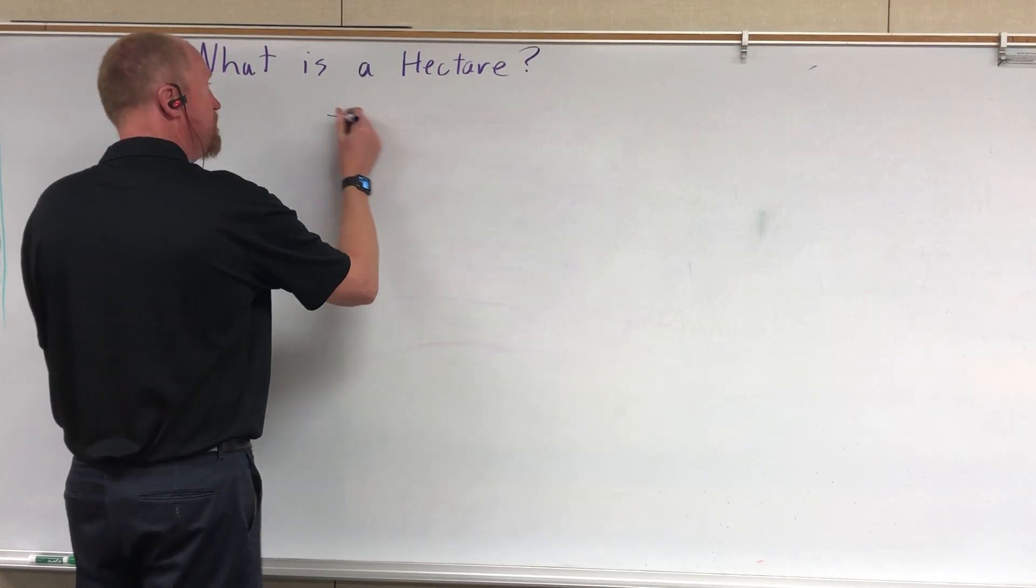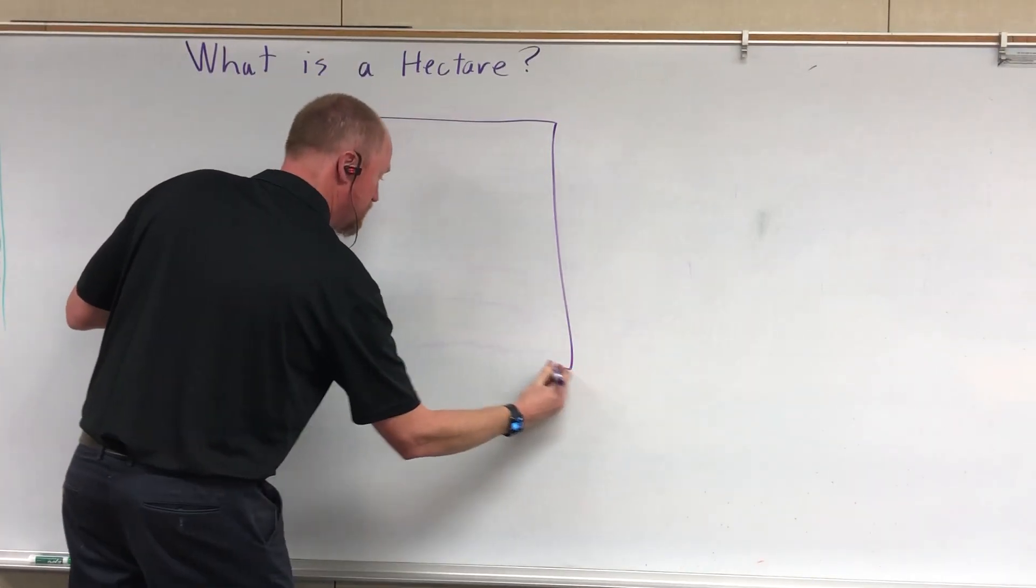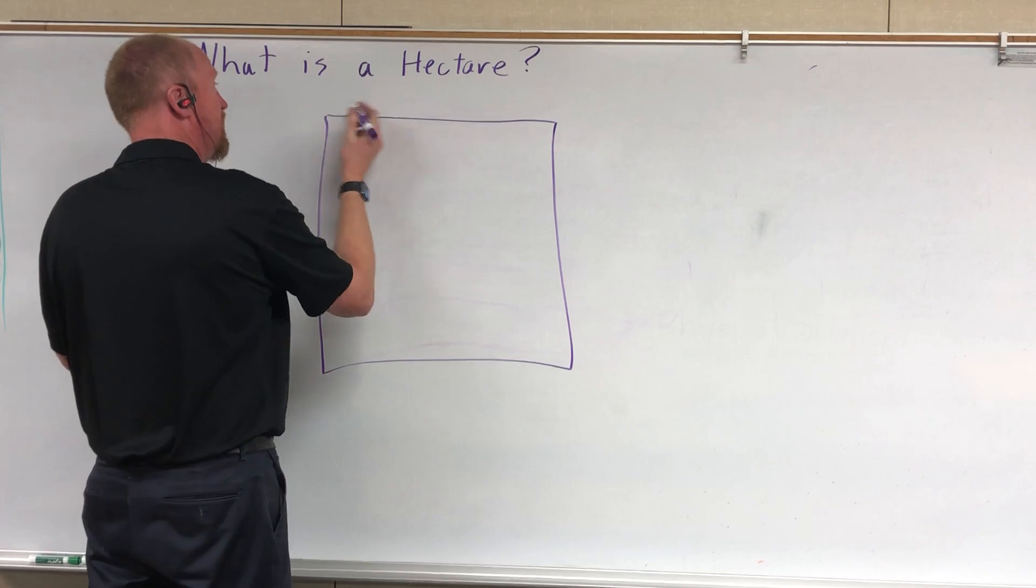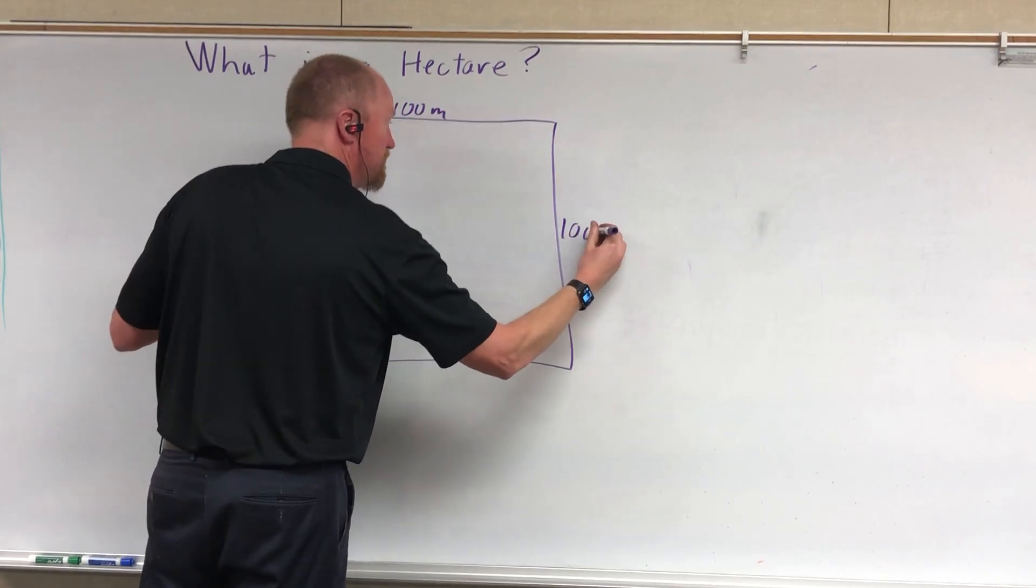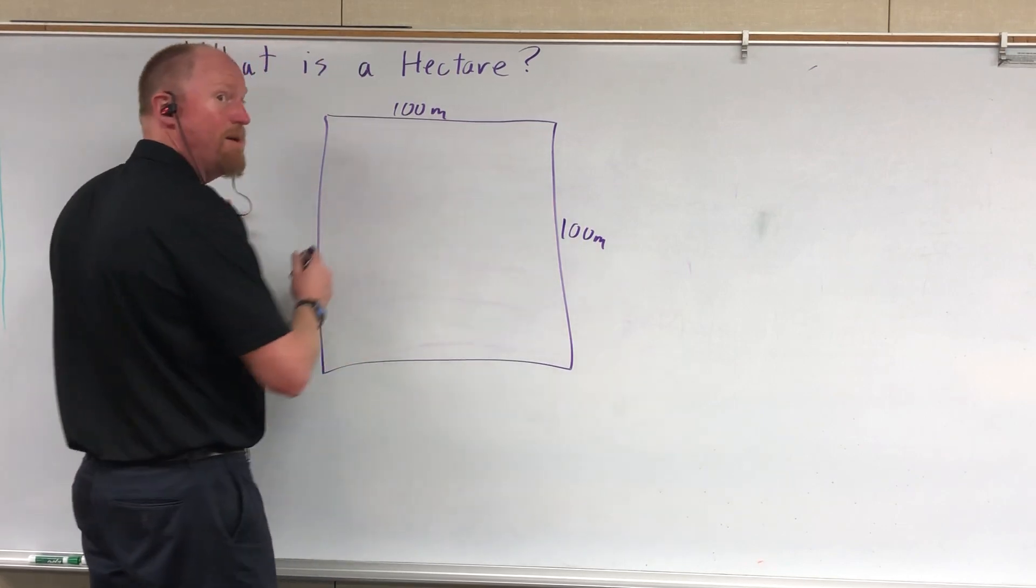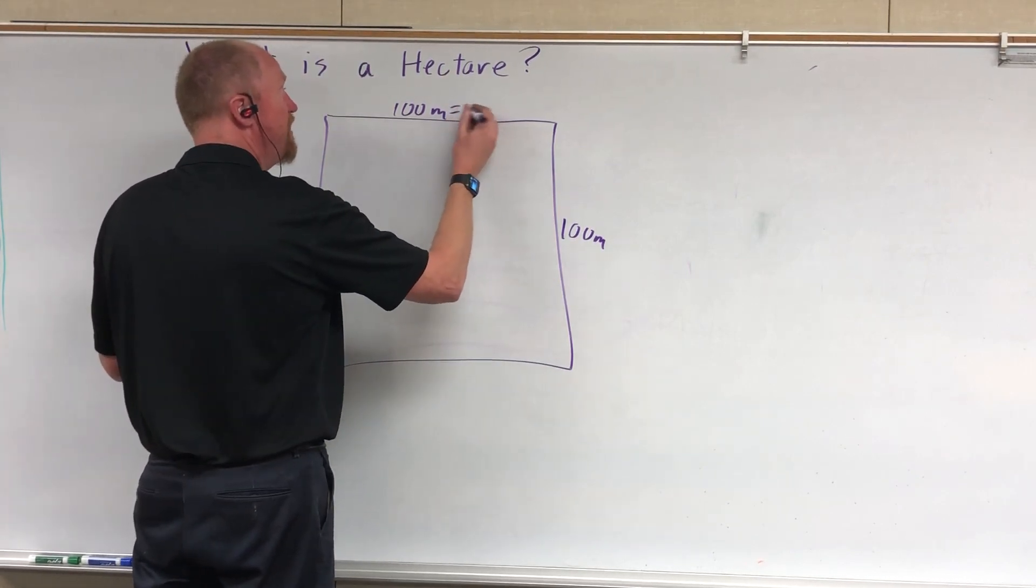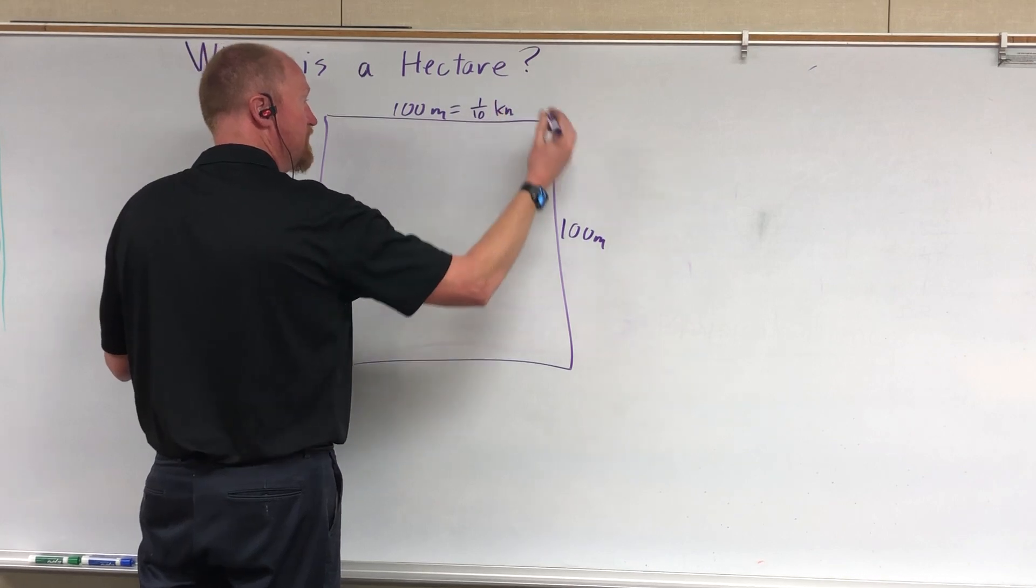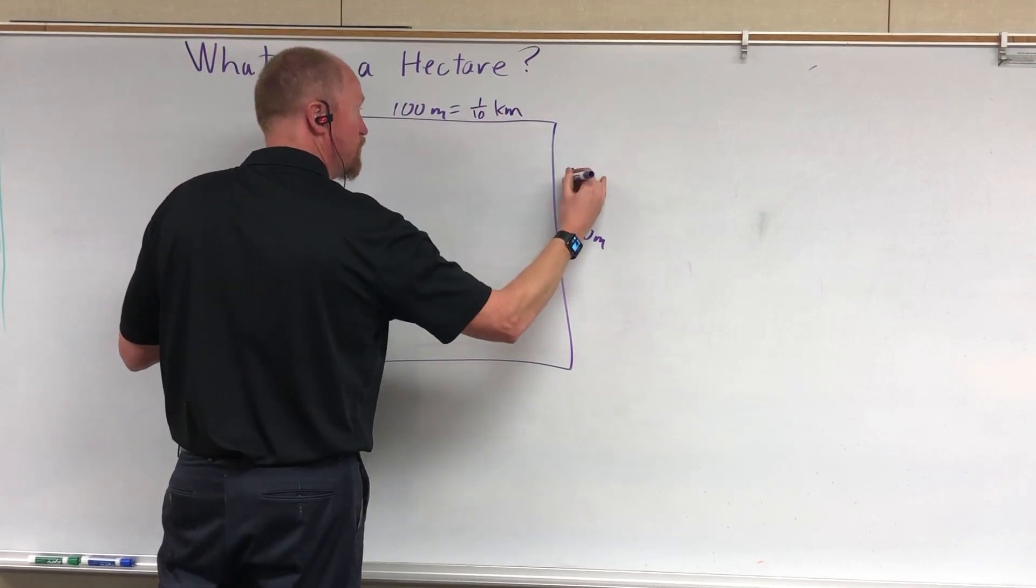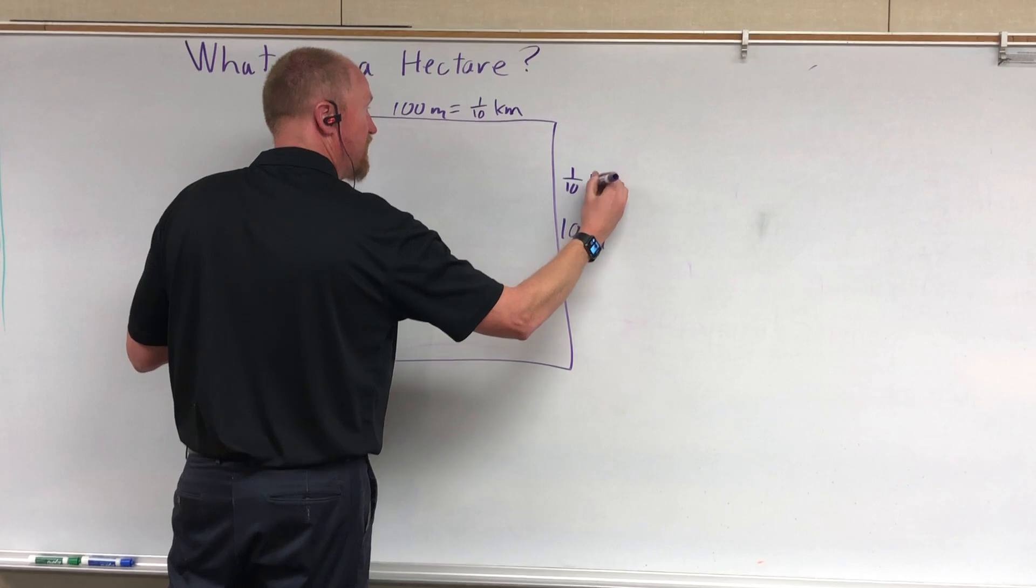Well, a hectare is equal to a square 100 meters by 100 meters. Now, a kilometer is a thousand meters, so 100 meters is equal to one-tenth of a kilometer. So each side is one-tenth of a kilometer.